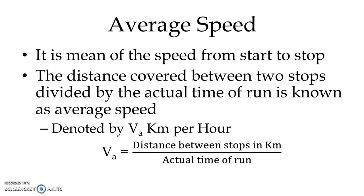Mathematically, it can be written as V_A equals the distance between stops in kilometers divided by the actual time of run. Distance is in kilometers and time is in hours, so average speed is measured in kilometers per hour.